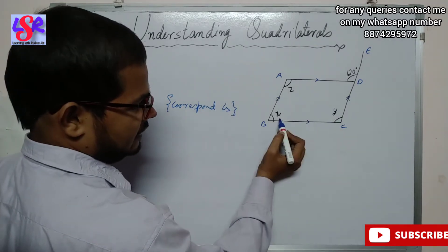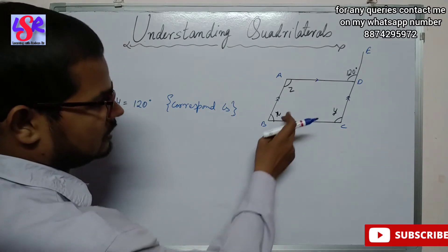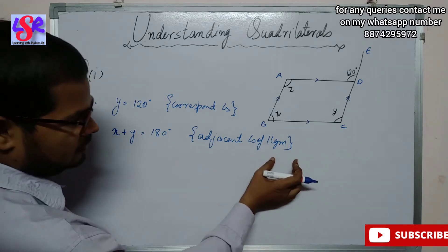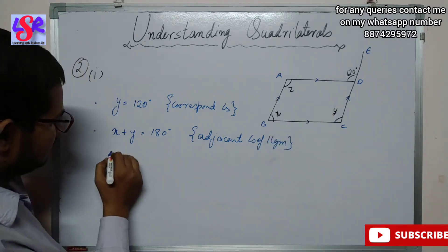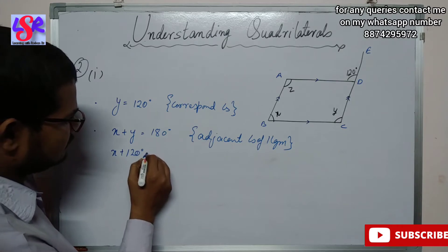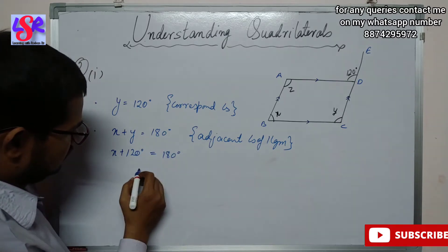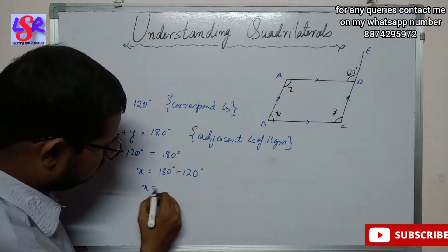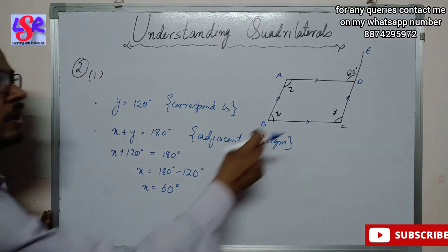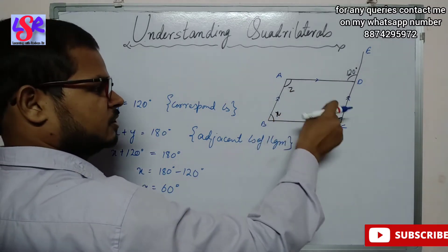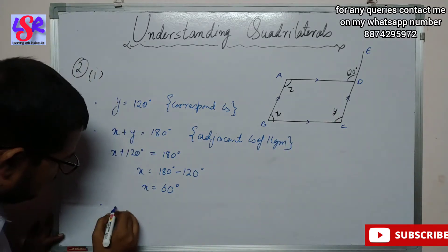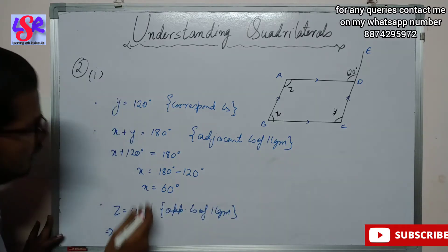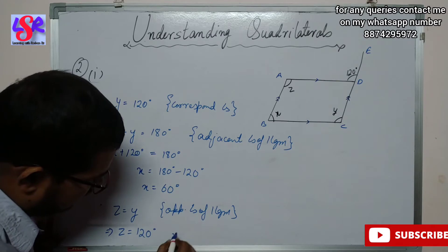Then Y and X are adjacent angles of the parallelogram, so their sum is 180 degrees. Therefore X plus Y equals 180 degrees. Placing Y as 120: X plus 120 equals 180, so X equals 60 degrees. Then Z equals Y as opposite angles of a parallelogram, so Z equals 120 degrees.